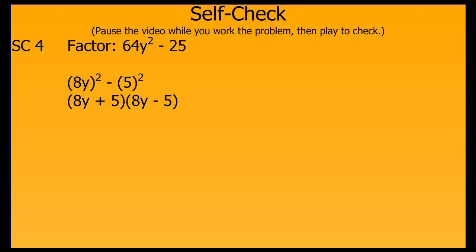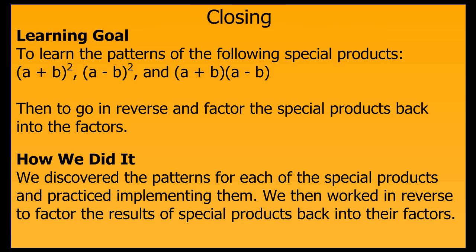Here's the solution — pause the video if you need more time to compare this to your work. In closing, let's review our learning goal. We wanted to learn the patterns of the special products: the quantity a plus b squared, the quantity a minus b squared, and the quantity a plus b times the quantity a minus b. Then we also wanted to go in reverse and recognize the pattern in the product and factor it. We did this by discovering the patterns, practicing implementing them, and then working in reverse to factor them so we could see the relationship between the special products and their factors.